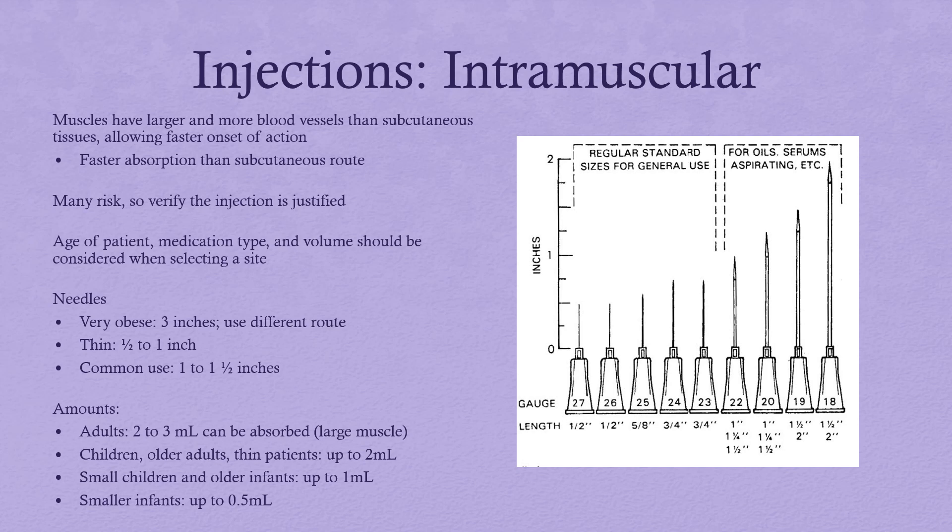A normal healthy adult can handle up to 5 mL into any one muscle, but we recommend never giving more than 3 mL into a large muscle group to ensure the patient doesn't have extra discomfort and that medication absorbs appropriately. In children, no more than 2 mL; smaller children, 1 mL; and infants can only tolerate about 0.5 mL. If you need to give 4 mL to an adult, divide it into two muscles so both sites absorb the medication appropriately.